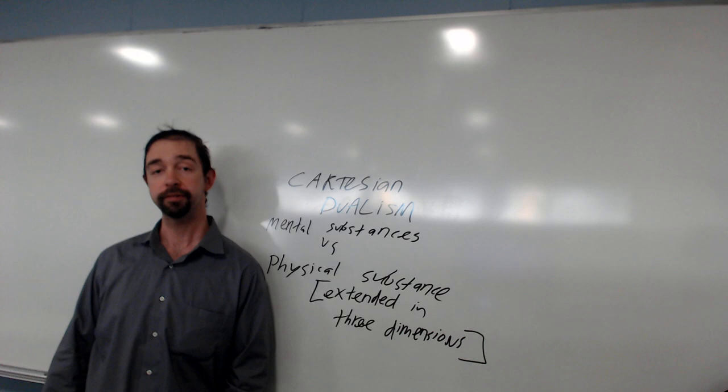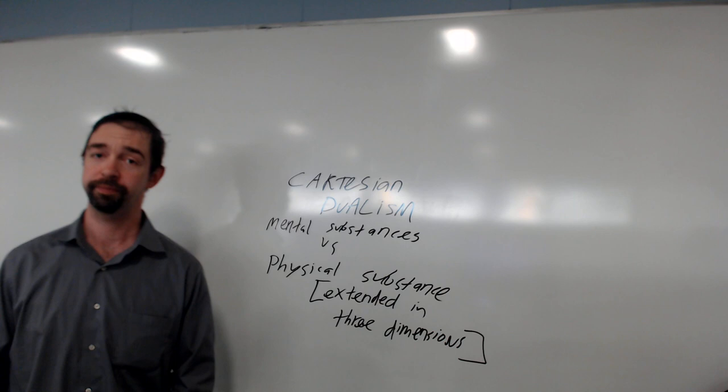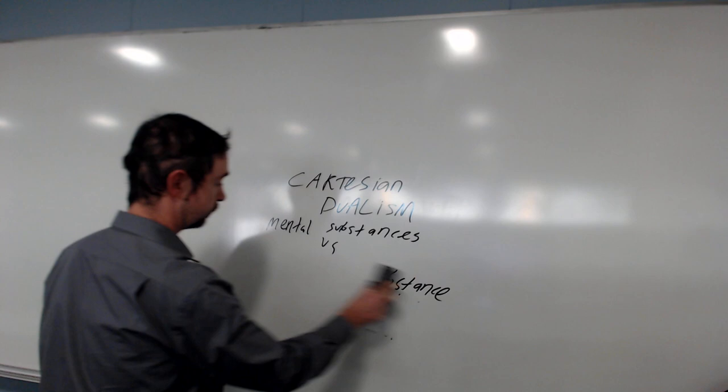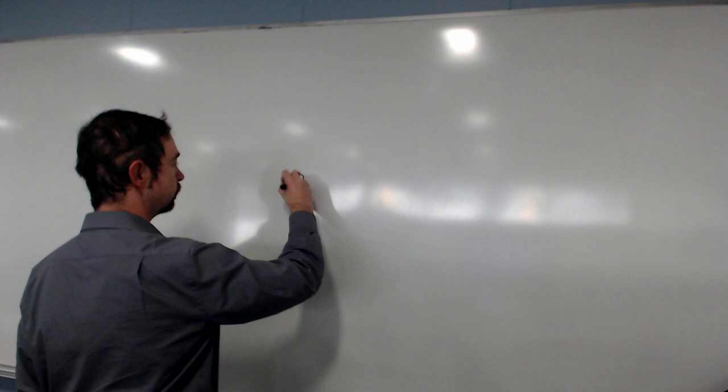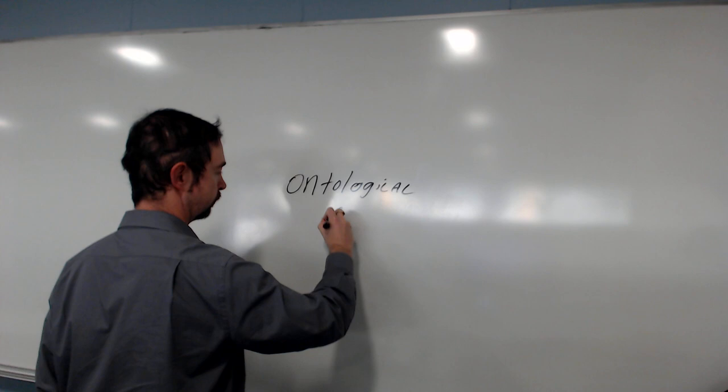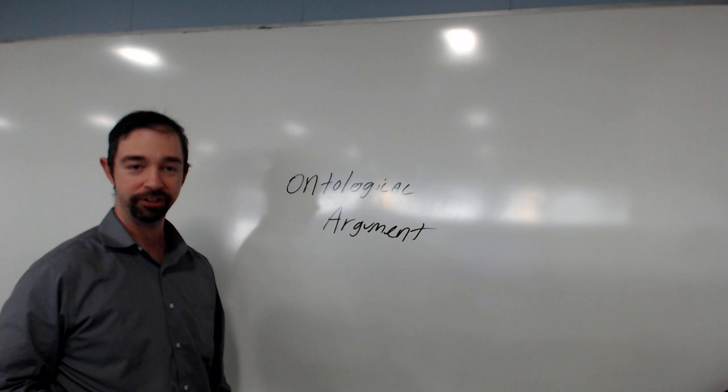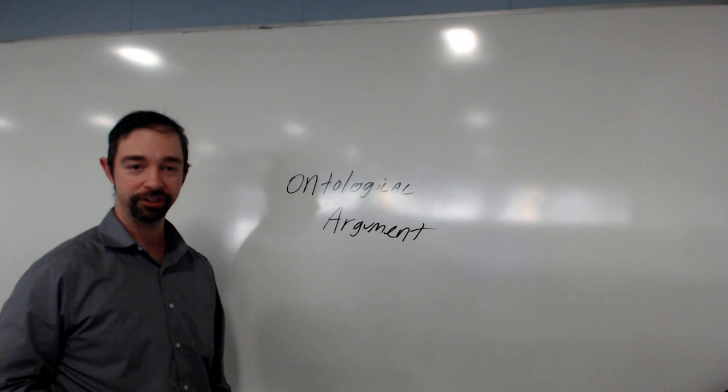Descartes thought he could prove the existence of God. How? It's a very elaborate argument. I'm going to simplify it pretty tremendously here. It's what's called an ontological argument. What's that word, ontological? That's a fancy Greek word, onto, which means existence. So it's an existence-based argument. And it works like this.